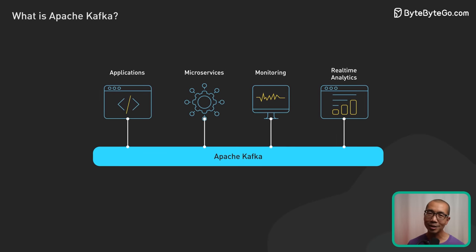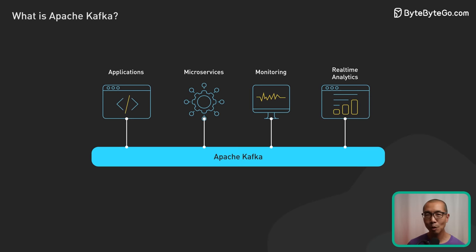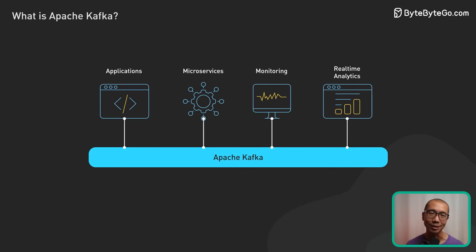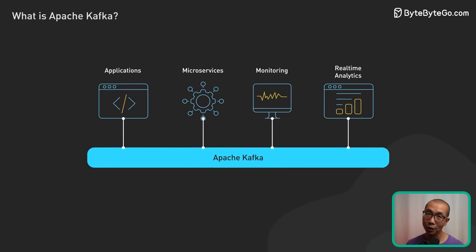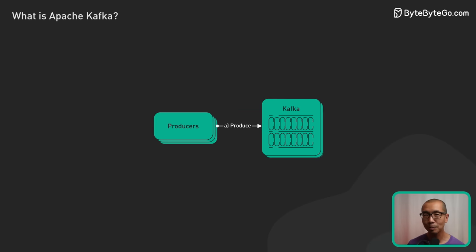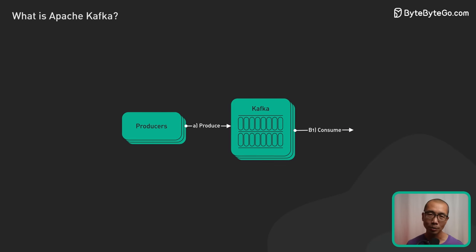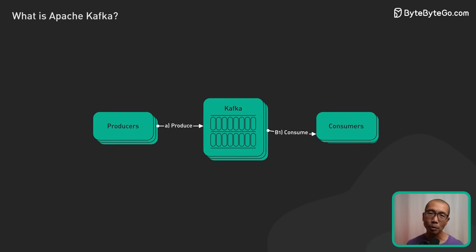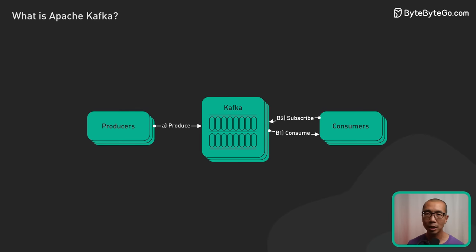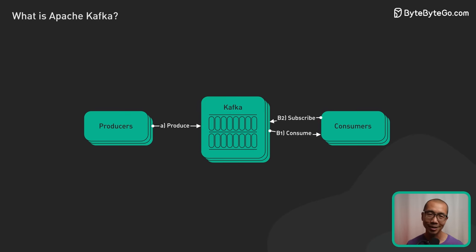Let's discuss some of Kafka's most common and impactful use cases. First, Kafka serves as a highly reliable, scalable message queue. It decouples data producers from data consumers, which allows them to operate independently and efficiently at scale.